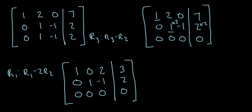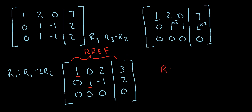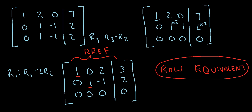This matrix is now in reduced row echelon form — the pivots are 1s, there are zeros above and below the pivots, the zero row is at the bottom, and each pivot is to the right of any pivot above it. This reduced row echelon form exactly matches the one we got from the first system. Therefore, as our final answer, the two matrices are row equivalent, because they had the exact same reduced row echelon form.